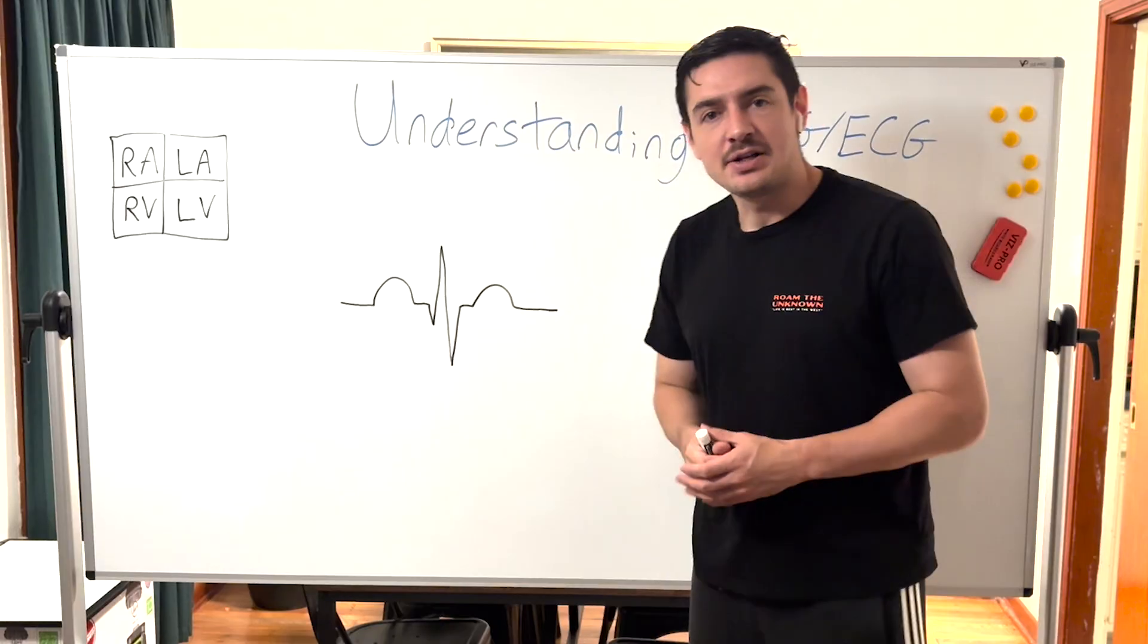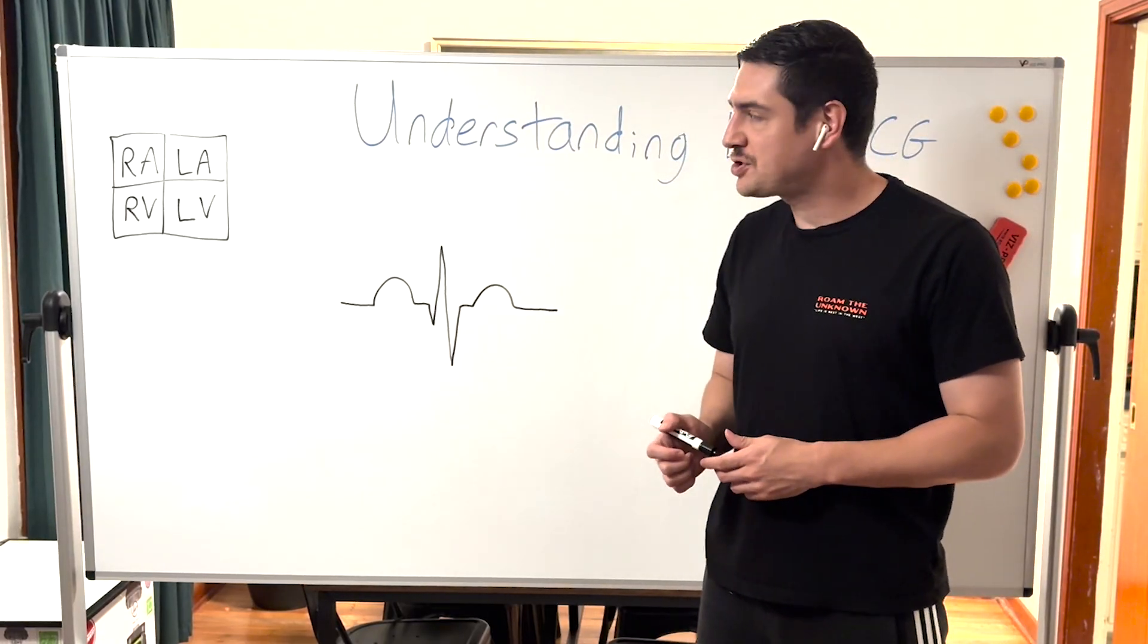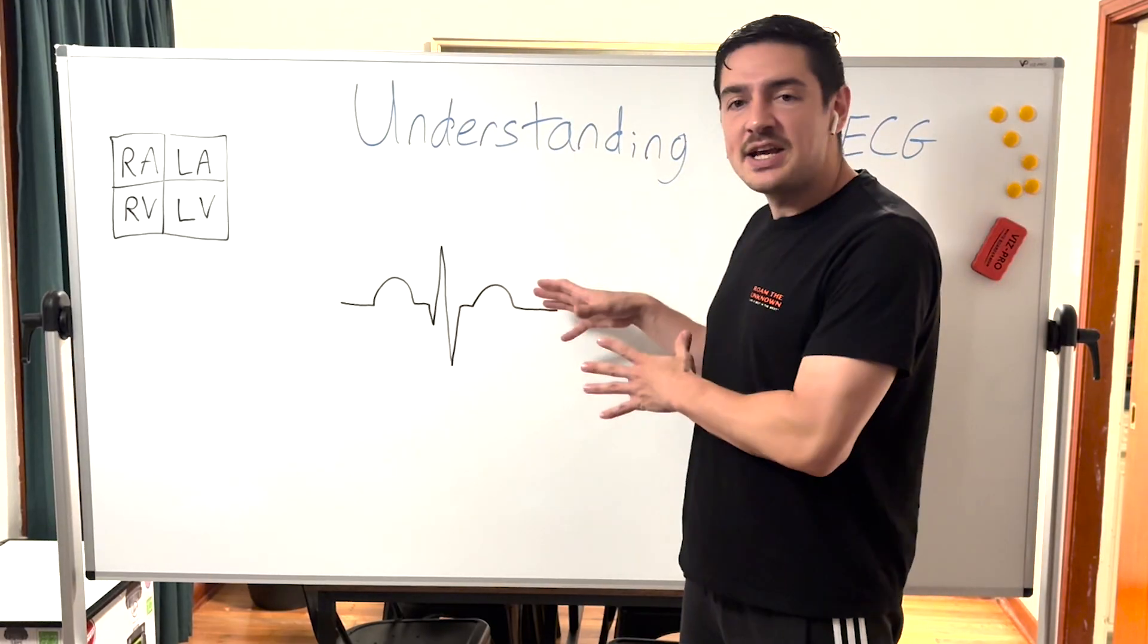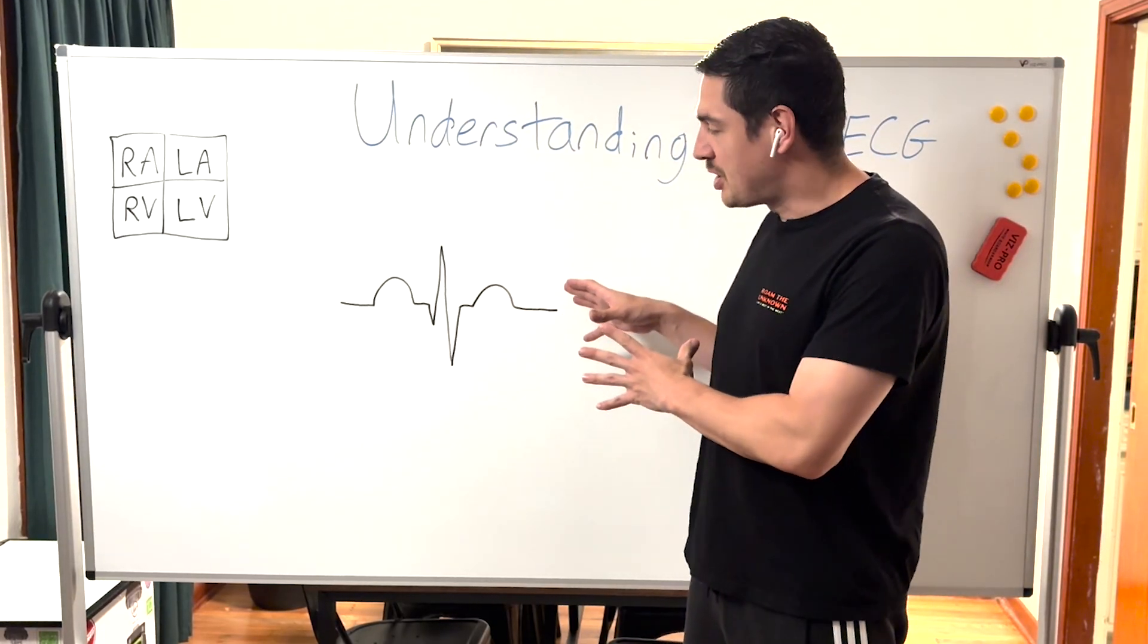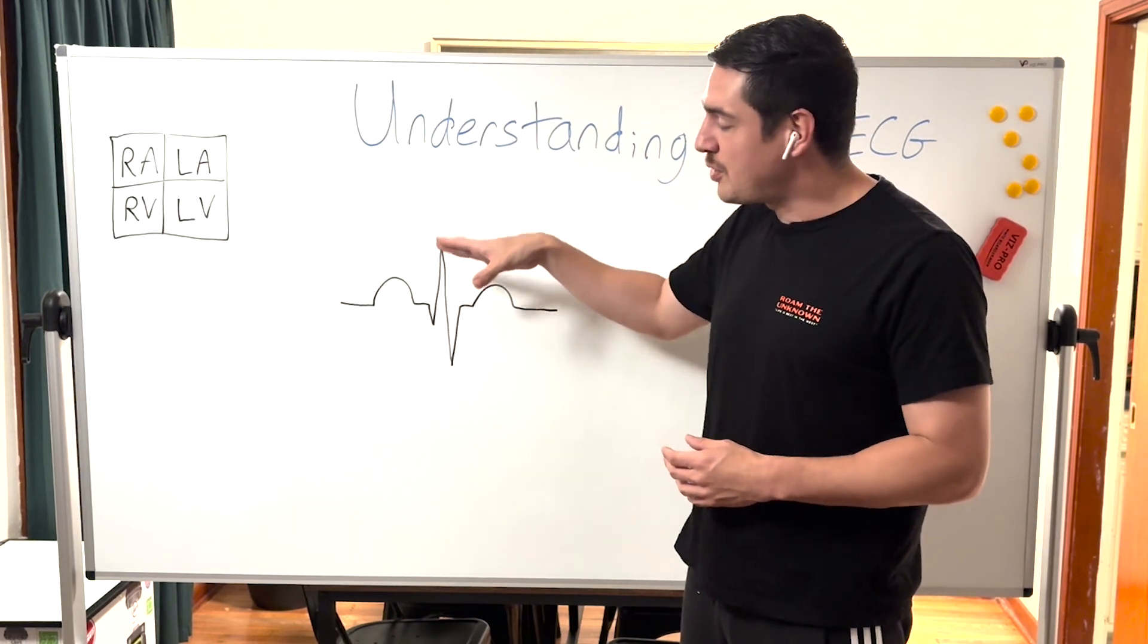Now that we have an idea about the right atrium, left atrium, right ventricle, and left ventricle, let's go more into detail about the EKG or the four lead. This is going to be the electrical conductivity of the heart in motion.